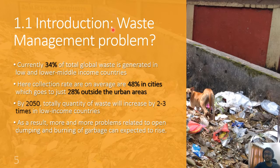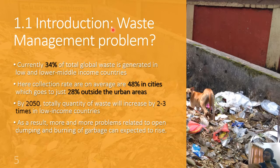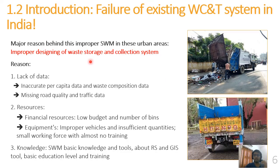The major focus of this study is underdeveloped and developing nations, and my solutions are basically for them. When talking about collection efficiencies in these regions, the average efficiency is just 48 percent in urban areas, while in smaller cities and towns it is as low as 28 percent. This is the waste which eventually ends up in the ocean and river ecosystem, lying openly on land or being burned openly. The major problem behind this is the improper design of waste storage and collection systems.